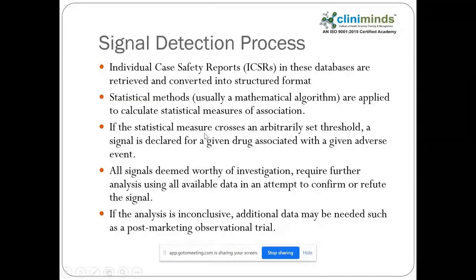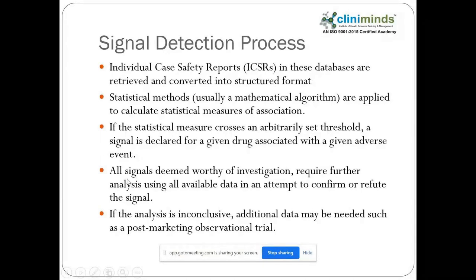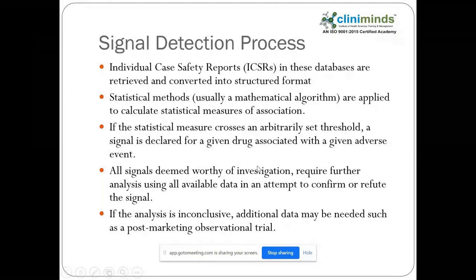These are the two basic methods — the qualitative and the quantitative method — of detecting a signal. This also covers how we set a threshold for statistical measures, and then we decide based on that.